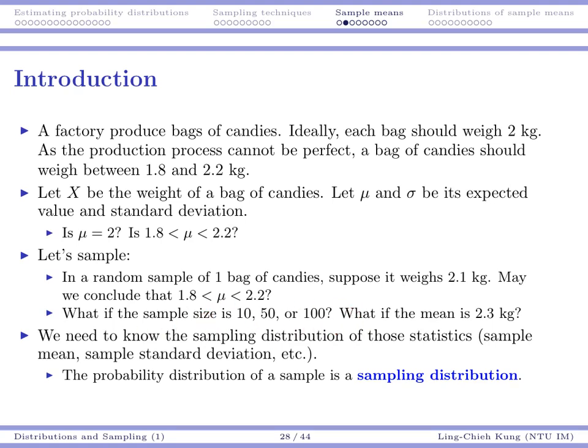What if the sample size is larger? If it's 10, then is that okay? If that's 50, if that's 100? If I get 100 bags and their sample mean is within 1.8 and 2.2, can I conclude anything? Or how about 50? How about 10? We have no idea. So that's why we need to study sampling distribution. We need to understand the distribution of sample means so that when we see a value of sample mean, we can infer the population. So that's our target.